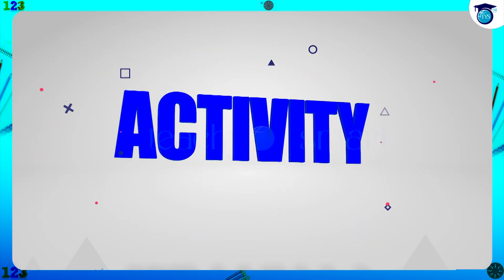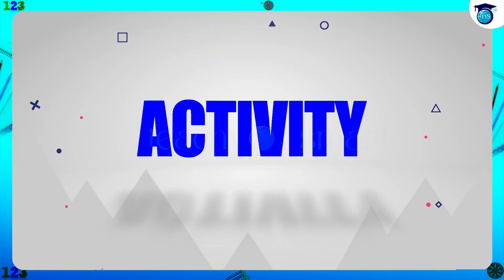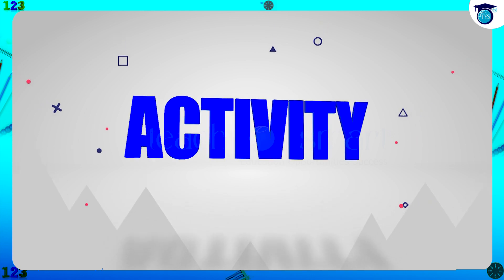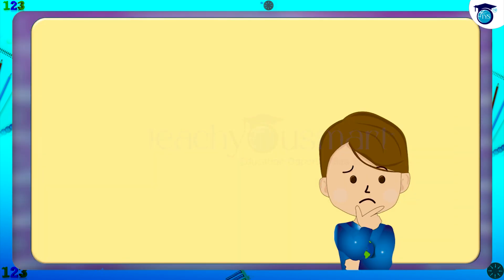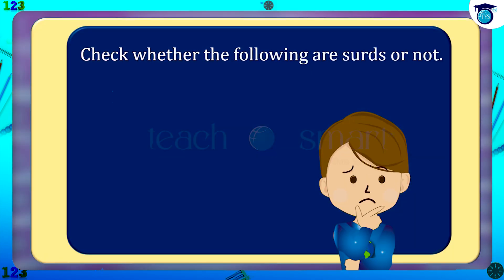Before winding up, let's check how much you understood by doing an activity. Check whether the following are surds or not: First, root 100. Second, cube root of 13. Third, fourth root of 25. And last, root of 4 plus root 3.